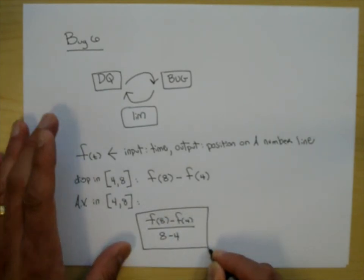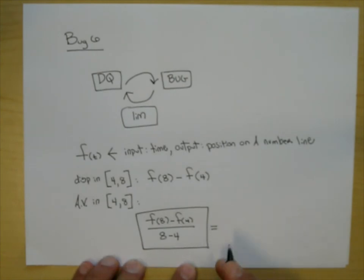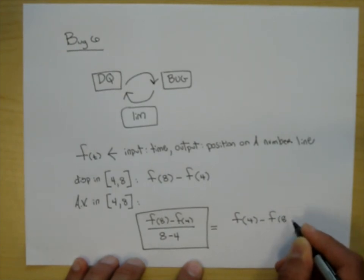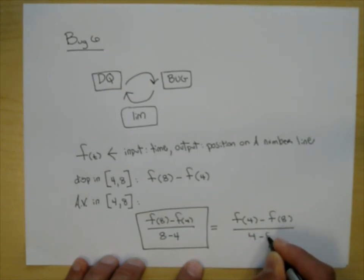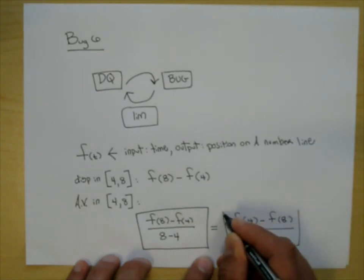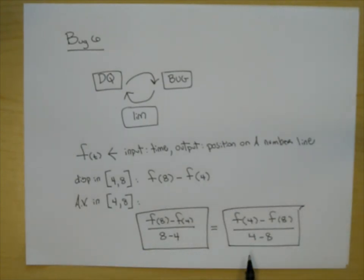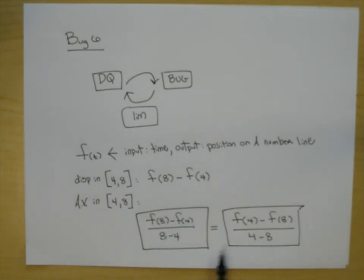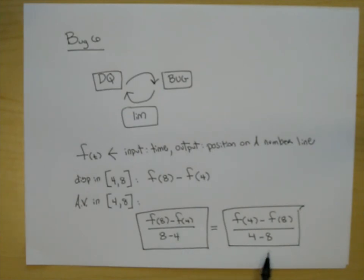This is the average velocity — this is what I'm going to focus on in this lecture. Here's the funny part: I could also get the average velocity by going F of 4 minus F of 8, all over 4 minus 8. If I multiply the bottom by negative 1 and the top by negative 1, I haven't really done anything to the fraction. I cannot say that displacement is F of 4 minus F of 8, but in terms of average velocity, it doesn't matter which way I write them.